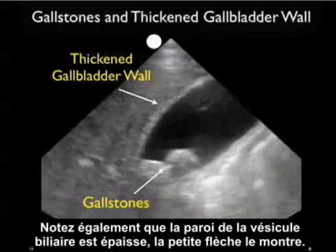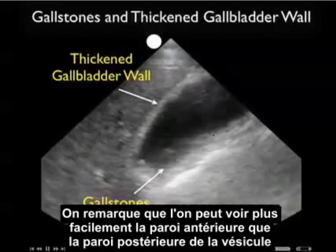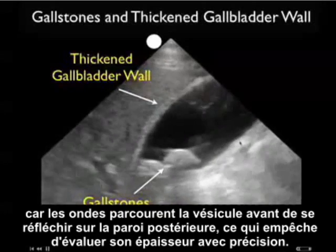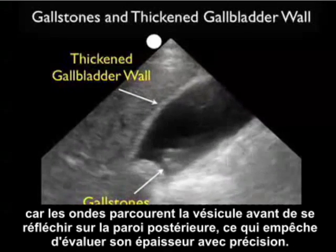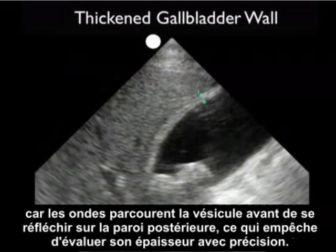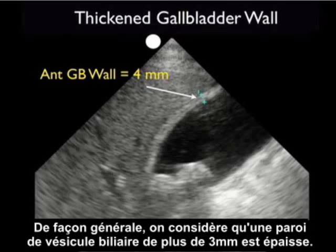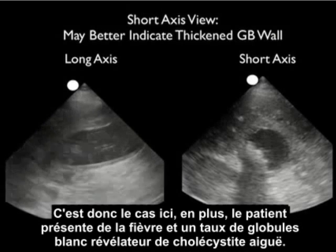Notice the presence of a thickened gallbladder wall as referenced here with a small arrow. It's much easier to see the anterior wall than the posterior wall because the sound waves race through the gallbladder and light up the back wall, making it difficult to assess its full thickness. When I put the calipers on the anterior gallbladder wall, I get a measurement of 4 millimeters. Most authorities define a thickened gallbladder wall as greater than 3 millimeters, so this meets the definition. This patient had a fever and elevated white count indicative of acute cholecystitis.